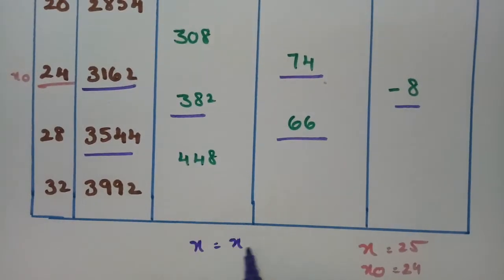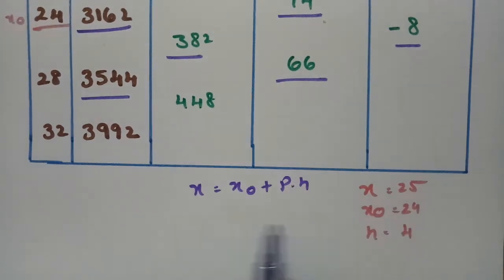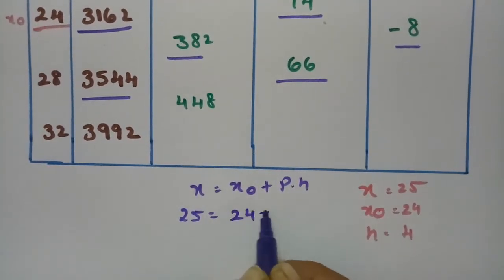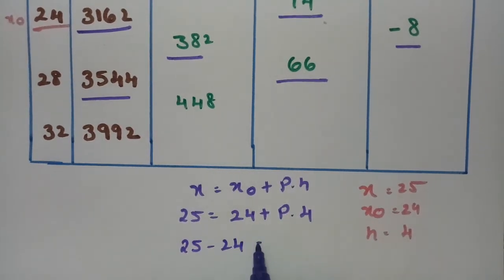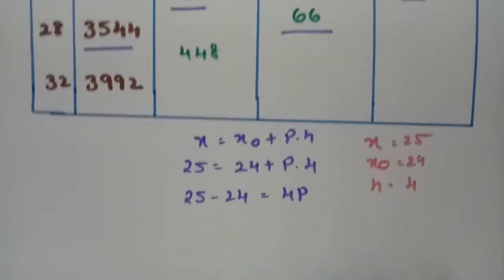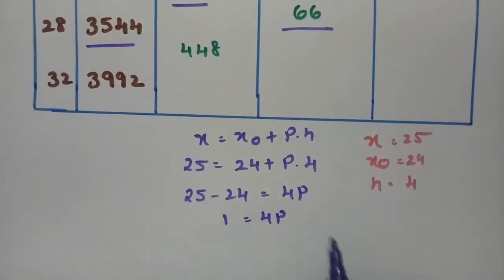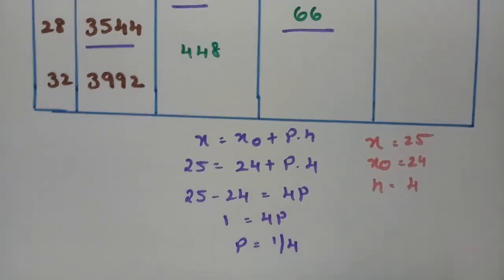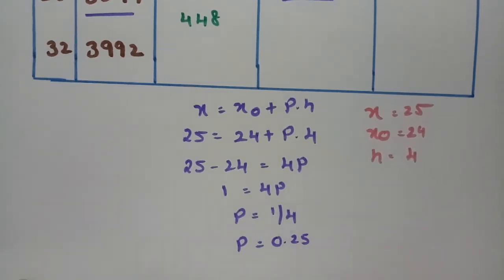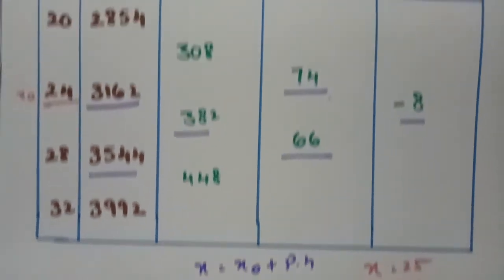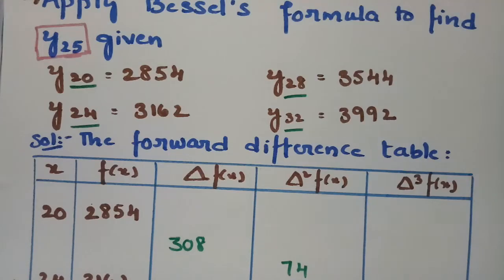Here x equals x naught plus p times h. Our x value is 25, x naught is 24, and h is 4. So 25 minus 24 equals 4p, giving 1 equals 4p, therefore p equals 1/4, which is 0.25.